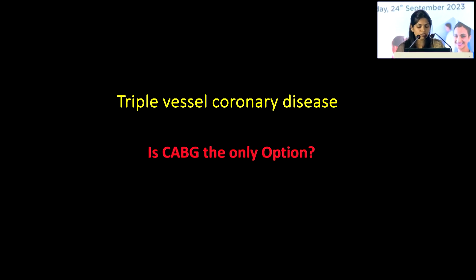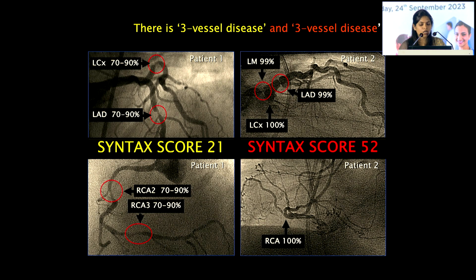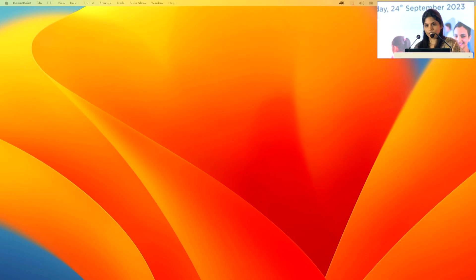To illustrate with a case scenario: two patients both presenting with triple vessel coronary artery disease — the first with a SYNTAX score of 21, the second with a SYNTAX score of 52. The key point is that triple vessel or left main disease does not automatically mean referral for CABG. We must calculate risk scores, give the patient an informed choice, and make the decision collaboratively. Thank you.